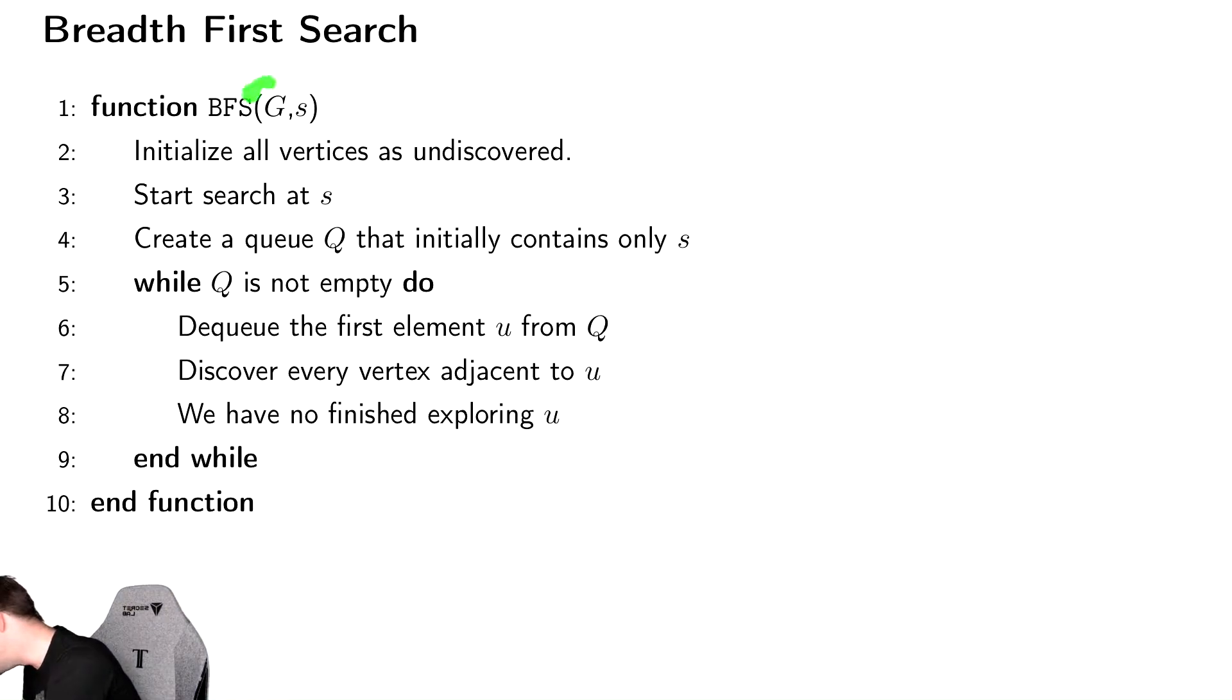It searches a graph G starting at S. The way that it searches the graph is it starts off by saying every vertex in the graph, I've never heard of them. So it says that these are all undiscovered. And then it will say, I'm going to start searching at that vertex S that you gave me, S meaning start. So you say I don't know where anything is, and then at the very start I say okay, I know where S is. You told me that's a vertex.